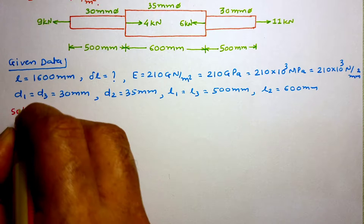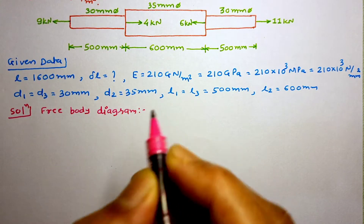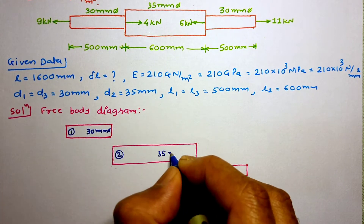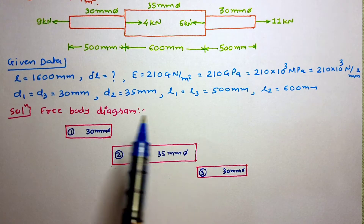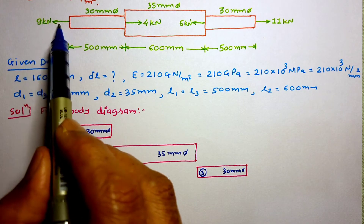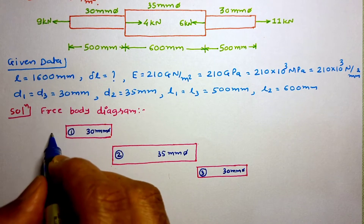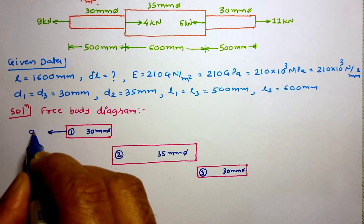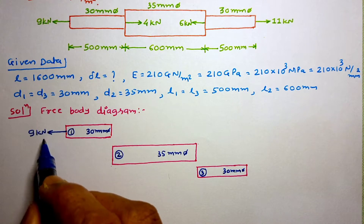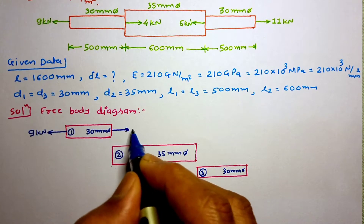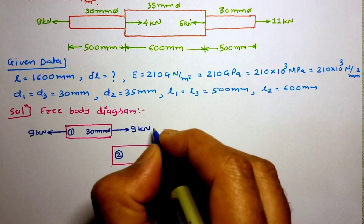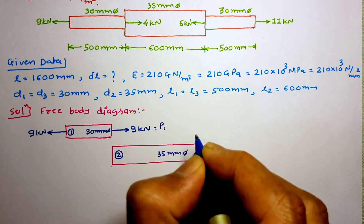Let us try to solve this problem. First of all, we will draw the free body diagram. We have drawn the free body diagram of the three sections. Starting with Section 1: it is subjected to a 9 kN force acting on the left-hand side. To balance this force we apply a 9 kN force in the right-hand side direction, making it a tensile force — this is the value of force P1.